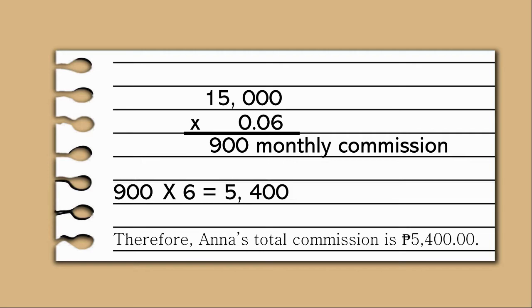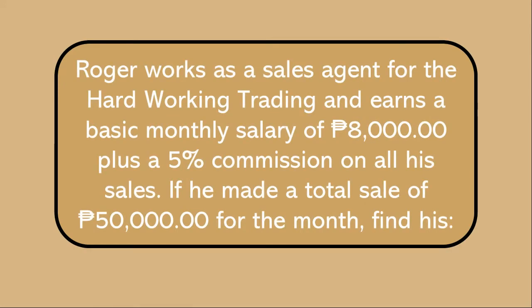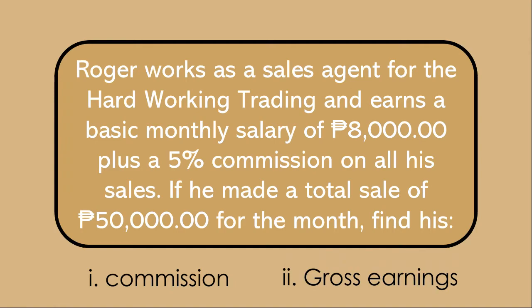Did you get the correct answer? Very good! Now let's try another one. Remember to pause the video after the problem is given. Roger works as a sales agent for Hard-Working Trading and earns a basic monthly salary of 8,000 pesos plus a 5% commission on all his sales. If he made a total sale of 50,000 pesos for the month, find: first, his commission; and second, his gross earnings.